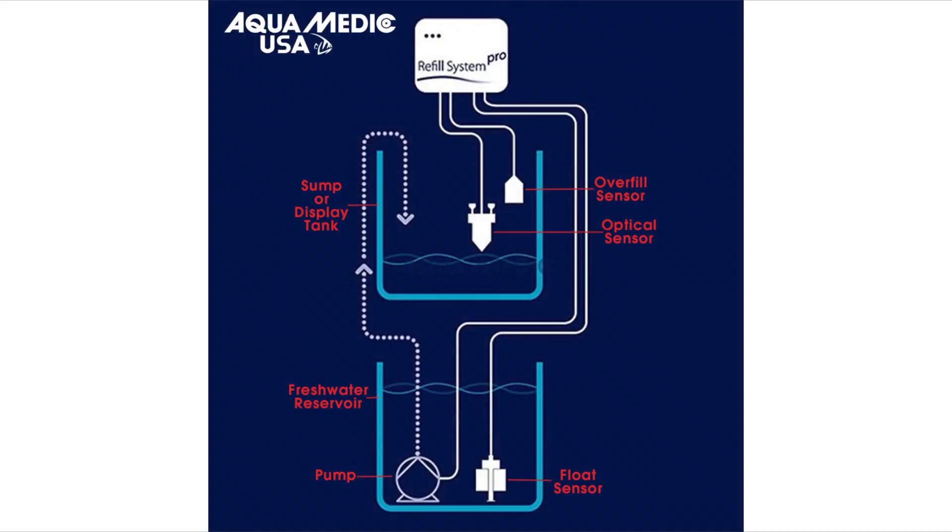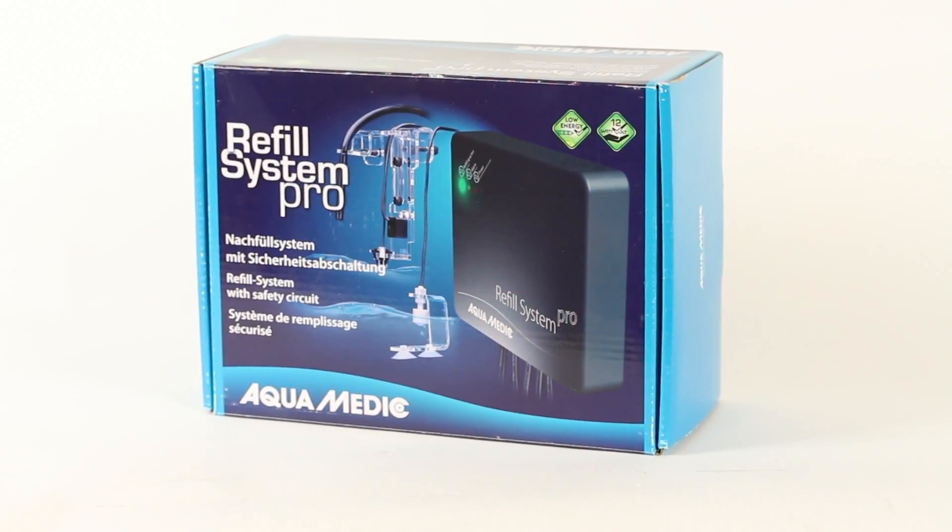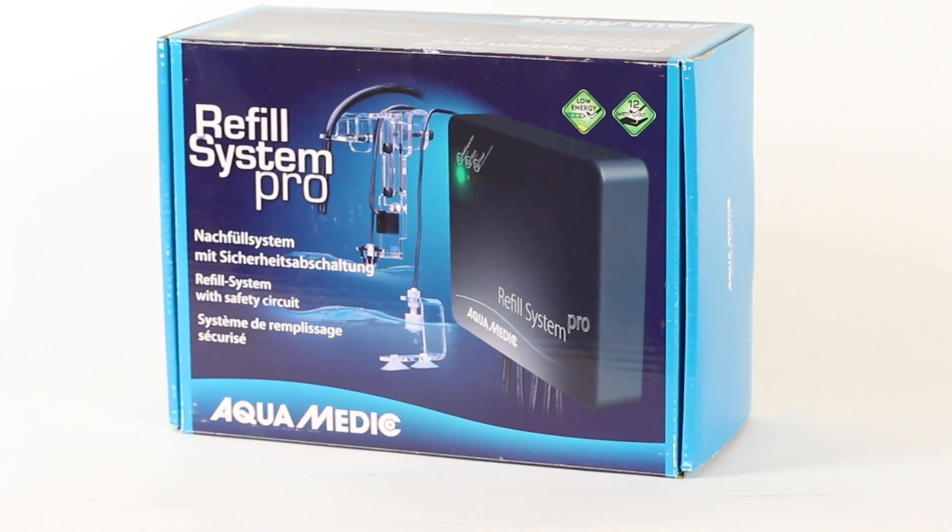The Aquamatic Pro ATO not only makes aquarium keeping easier, it helps keep the aquarium environment more stable. Your salinity won't rollercoaster up and down due to evaporation and large top-offs. No matter what kind of aquarium you have, your tank will always be topped off with the Aquamatic Pro ATO.